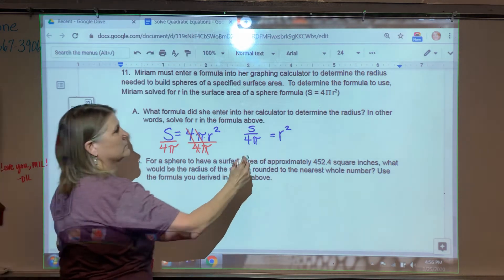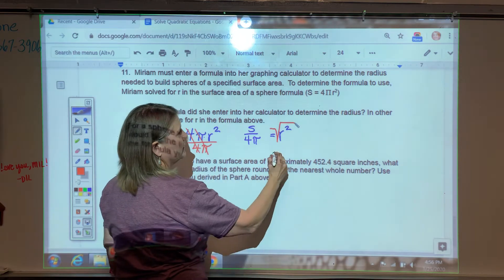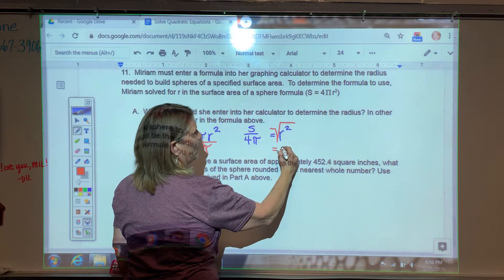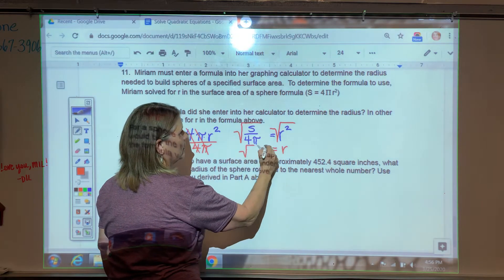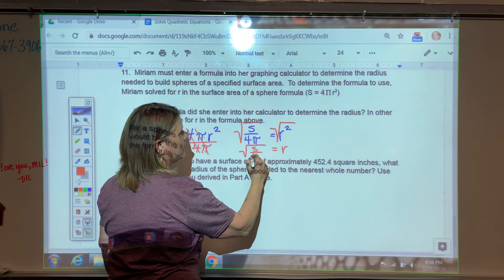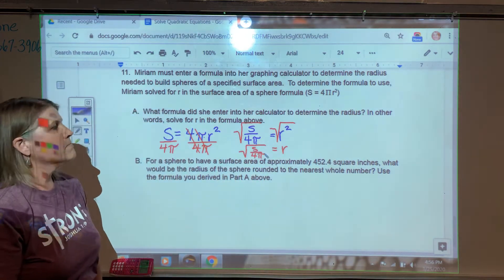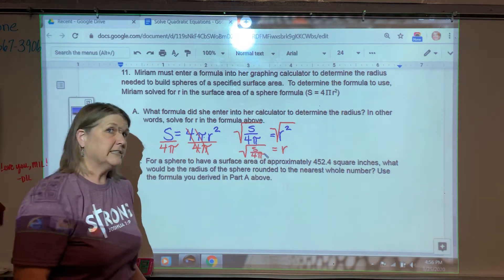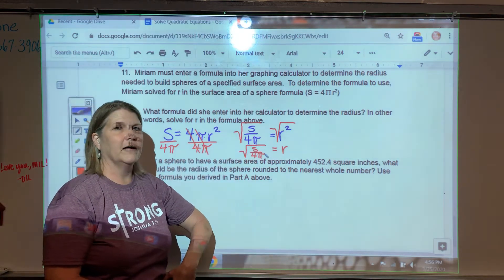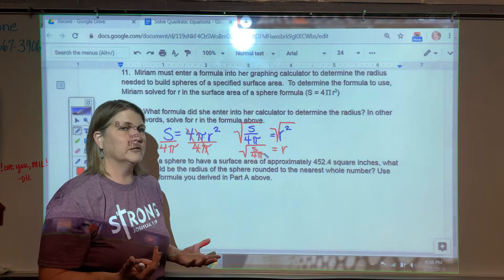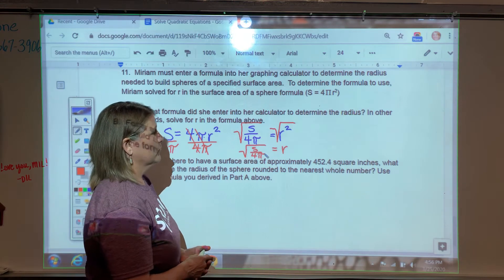And now to solve for R, I'm going to take the square roots of both sides. So this will leave us with R and the square root of S over 4 pi. And you might be saying, this should be plus or minus S over 4 pi. In most cases, I would say yes. But because we're talking about the radius of a sphere, then the negative of that isn't useful here. So I could just say the positive square root of S over 4 pi.